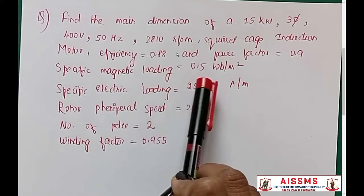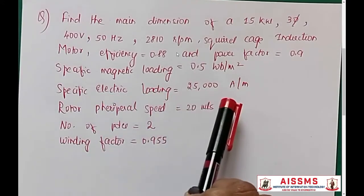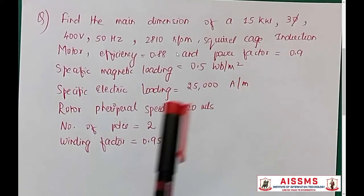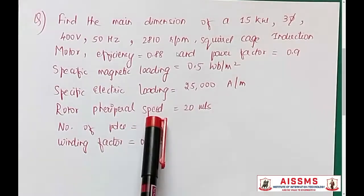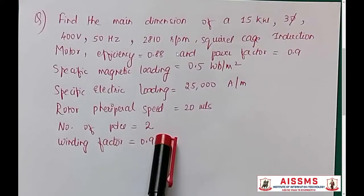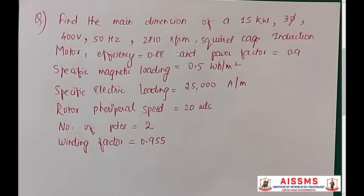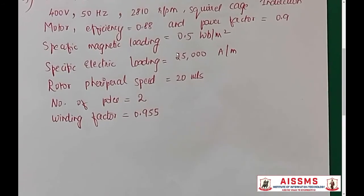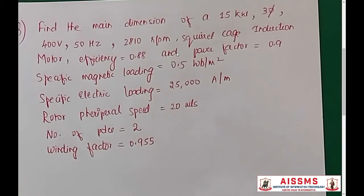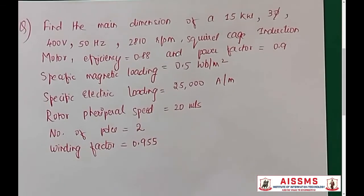Specific magnetic loading 0.5 Weber per meter square. Specific electric loading 25,000 amperes per meter. Rotor peripheral speed 20 meters per second. Number of poles 2 and winding factor 0.95. As we have seen with the earlier numerical, to this numerical also, we are supposed to write down first all the given data.